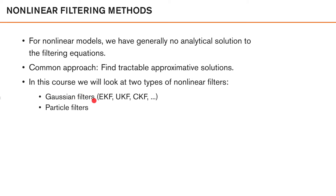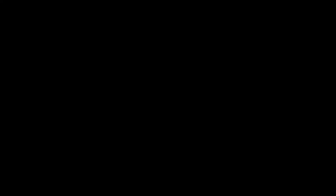In this course we will look at the two most common types of non-linear filters. The first type is Gaussian filters, such as the extended Kalman filter, unscented Kalman filter, or cubature Kalman filter — all of which aim to approximate the posterior as a Gaussian distribution. The second type is particle filters, which instead describe the posterior as a weighted set of samples or particles. We will discuss particle filters in a later section.